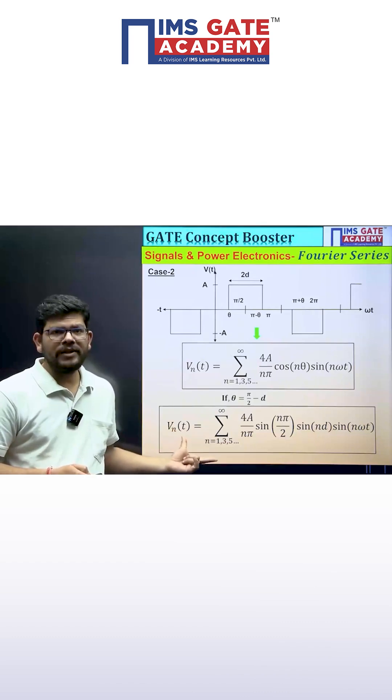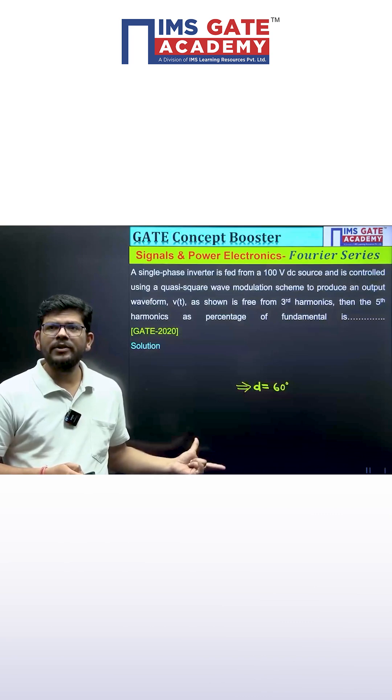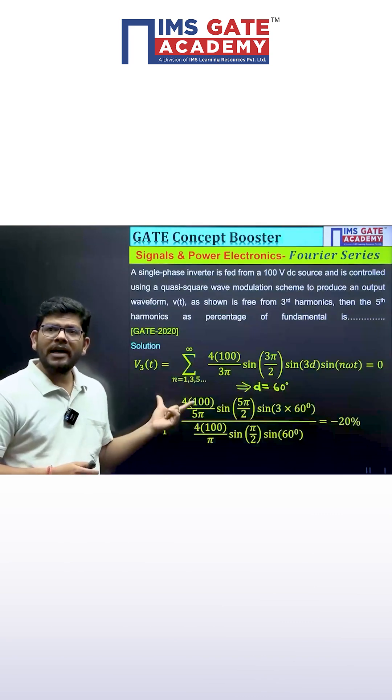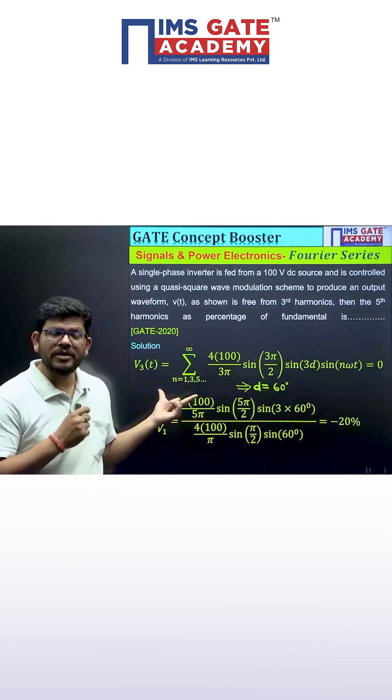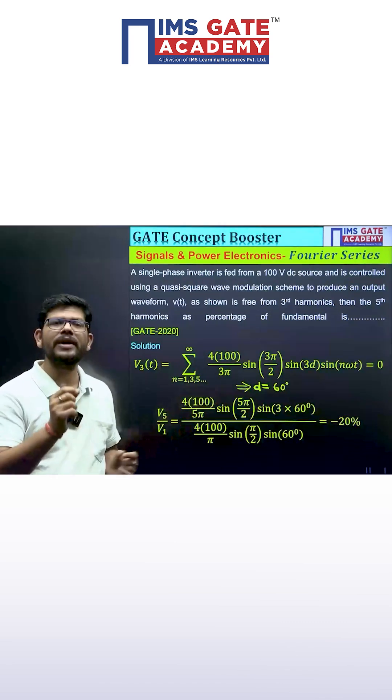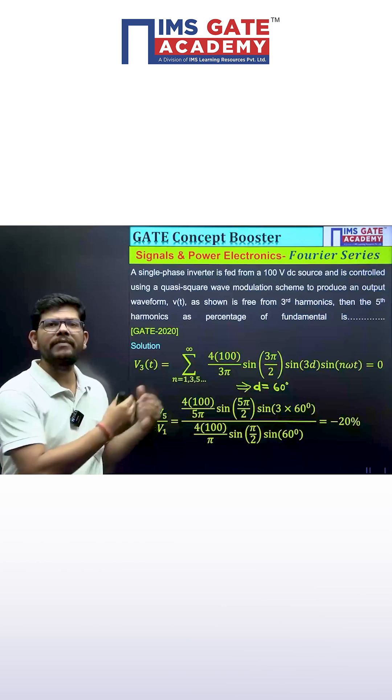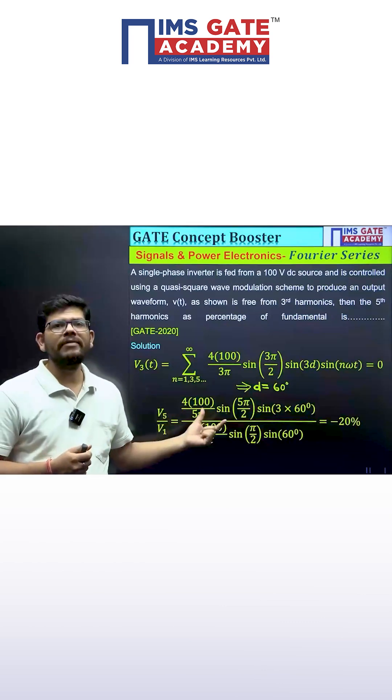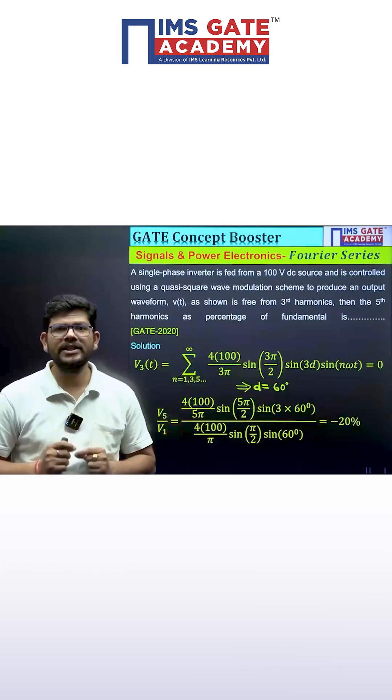Now if we are going to apply the same expression in the given case, the waveform is free from third harmonic. So when you write the expression for third harmonic by putting n equals to three in the expression and equate it to zero, you will get the value of d, and d is coming 60 degrees.